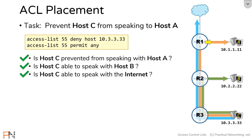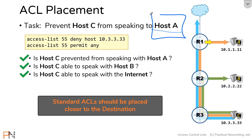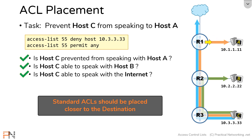So we finally found the perfect place to apply that access list — we are successfully preventing host C from speaking to host A, and successfully not getting in the way of host C speaking to host B or the Internet. We can learn from this that when you have a standard access list, the best place to apply it is closest to the destination. Our goal was to filter traffic from host C to host A, making host A the destination, and the best placement was as close as possible to host A — this way it didn't inadvertently block more traffic than we meant to.